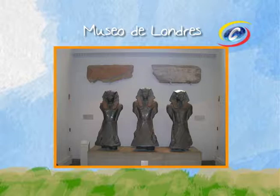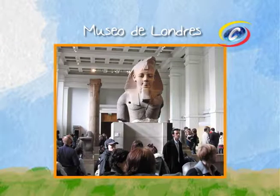Egipto no tiene esas piezas; están en el Museo de Londres y en otros museos, porque fueron extraídas y robadas prácticamente, llevadas a otros países. De esas estructuras todavía hay un proceso de excavación buscando más tesoros en esas pirámides.